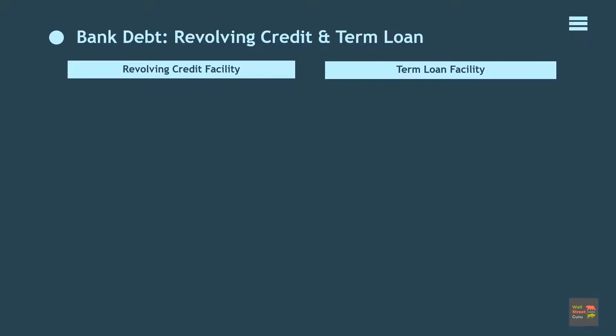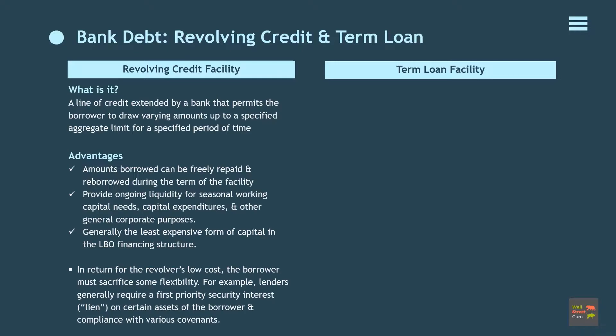What are the differences between a revolving credit facility and term loan? A revolving credit facility is a line of credit extended by a bank or group of banks that permits the borrower to draw varying amounts up to a specified aggregate limit for a specified period of time. It is unique in that amounts borrowed can be freely repaid and reborrowed during the term of the facility, subject to agreed upon conditions set forth in a credit agreement. The majority of companies utilize a revolver or equivalent lending arrangement to provide ongoing liquidity for seasonal working capital needs, capital expenditures, and other general corporate purposes.